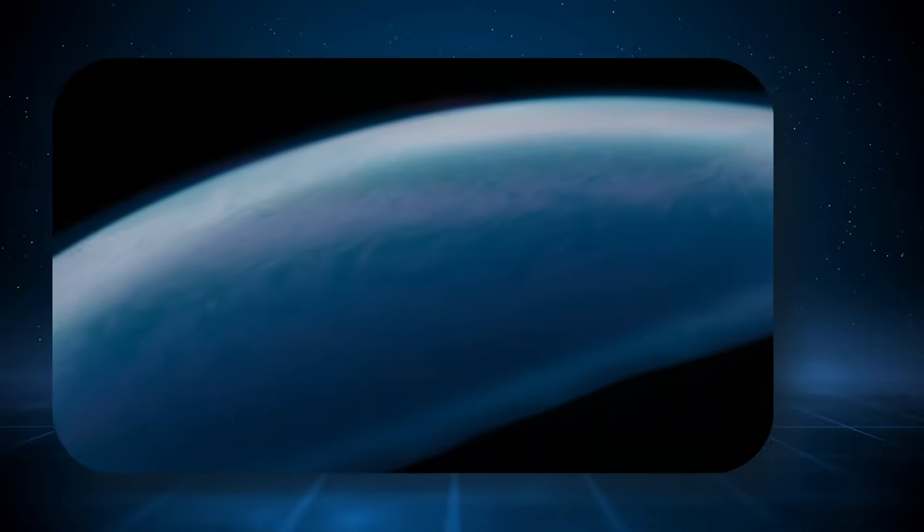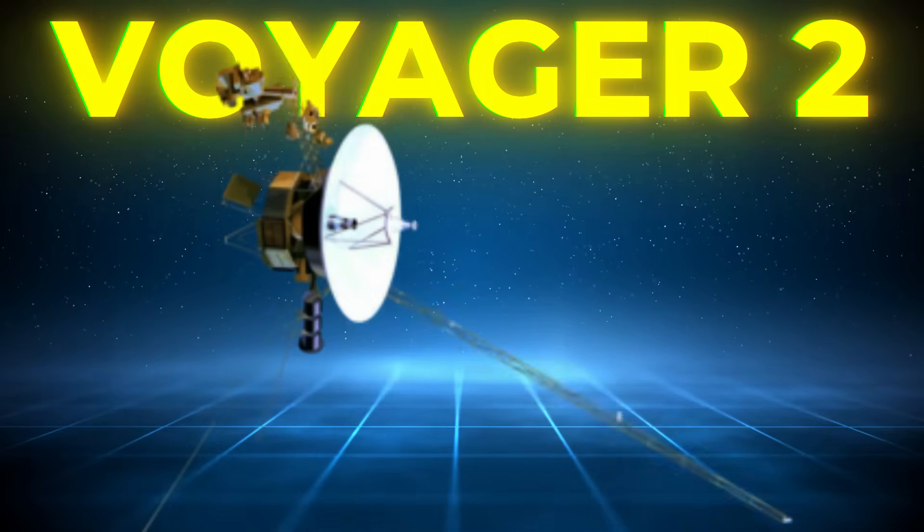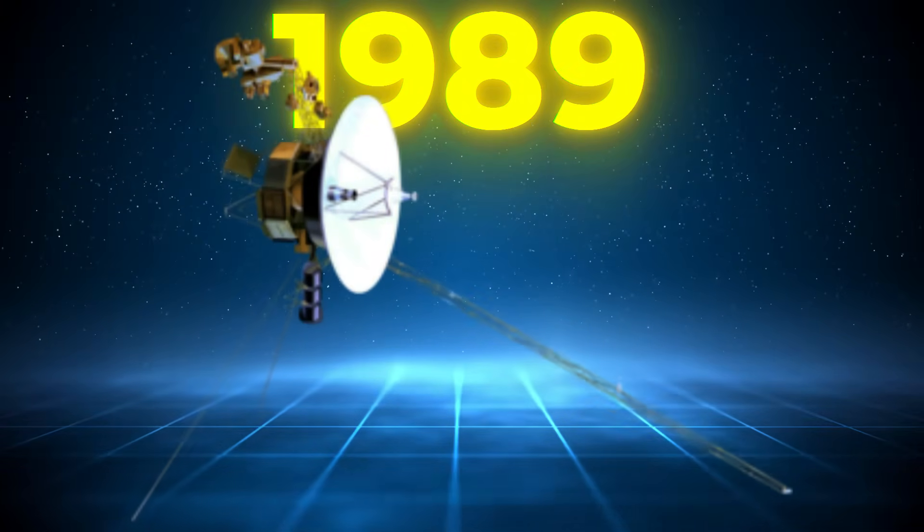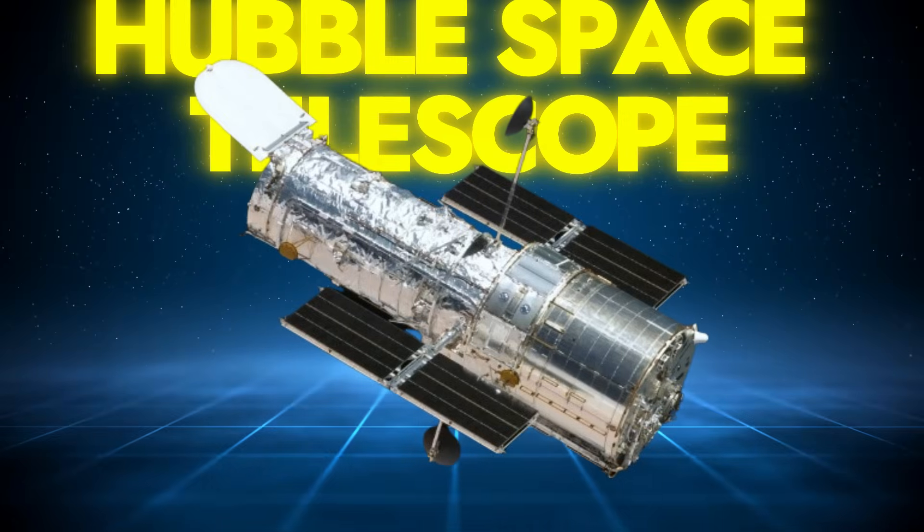Until recently, our understanding of Neptune was shaped by data from the Voyager 2 flyby in 1989, ground-based observations, and occasional captures from the Hubble Space Telescope. However, these observations, while invaluable, painted a relatively static and oversimplified picture of the planet. What Tyson brought to light shattered that simplicity.